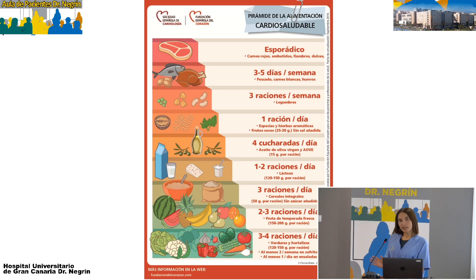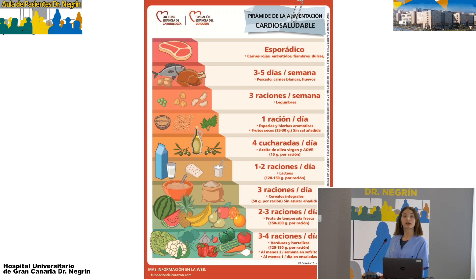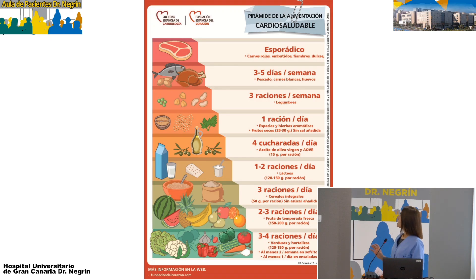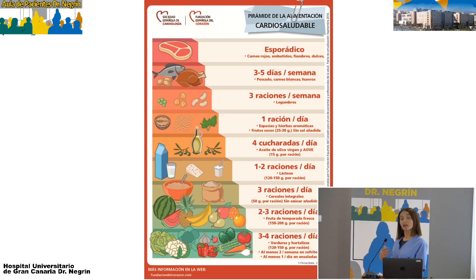Luego tenemos las proteínas de origen animal. Las mejores van a ser siempre las del pescado, que siempre es más sano que la carne. Al menos una vez a la semana debe ser pescado azul: bonito, atún, salmón, sardinas, caballas. También se puede consumir el pescado blanco. En carnes saludables tenemos las carnes blancas: pollo, pavo y conejo. Estos, igual que el pescado y los huevos, se pueden consumir de 3 a 5 veces en semana.